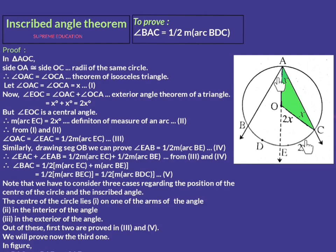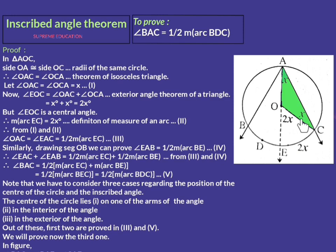Look at the green triangle, triangle AOC. In this triangle, side OA is congruent to side OC — the reason being that OA and OC are radii of the same circle. Hence triangle OAC is an isosceles triangle. By the isosceles triangle theorem, if two sides of a triangle are congruent, then the opposite angles are also congruent. Hence angle OAC is congruent to angle OCA. Let these two angles each equal x, so angle OAC = angle OCA = x. This is statement number 1.